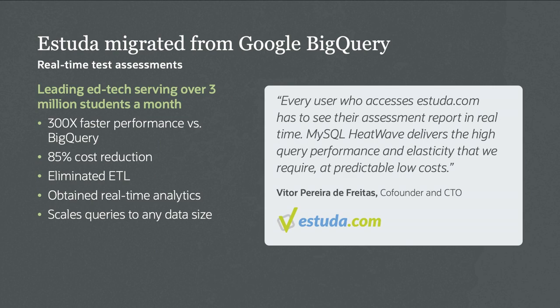Estuda migrated from a combination of Aurora and Google BigQuery — Aurora for transactions and BigQuery for analytics, with an ETL between them. When they migrated to MySQL HeatWave, they got 300 times faster performance than with Google BigQuery, an 85% reduction in cost, and they eliminated that ETL. Their data is now in one single place, they get real-time analytics without worrying about when the ETL last ran, and they can scale up and down as needed.